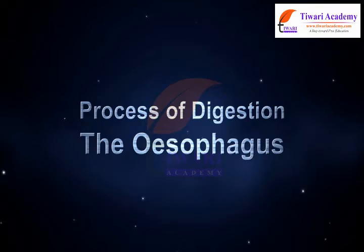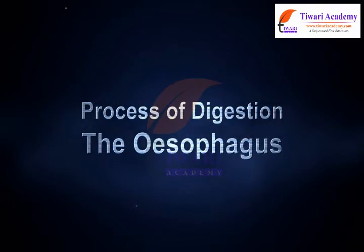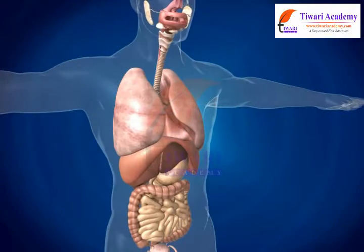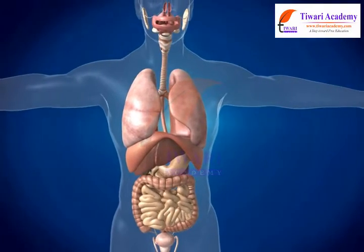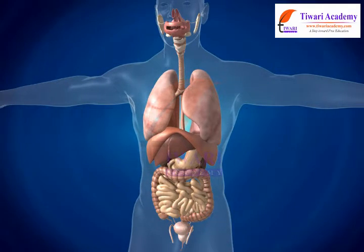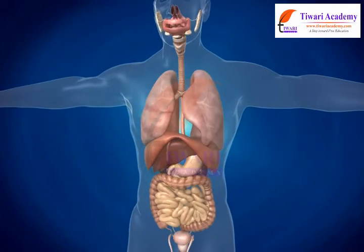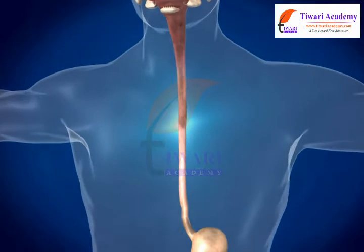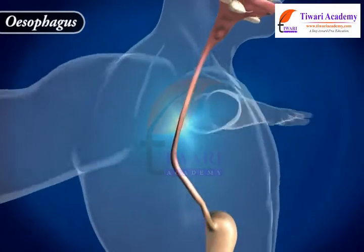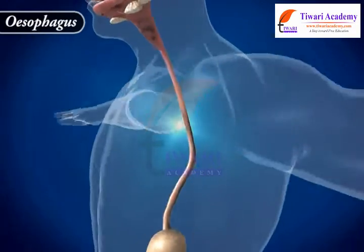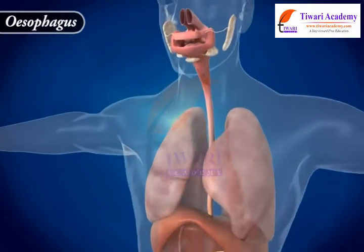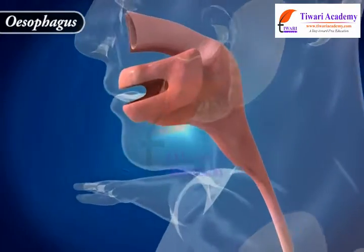Dear students, the swallowed food is passed into the food pipe, or esophagus. Let us learn more about the process of digestion in the esophagus. The esophagus is a long, narrow, and tubular part of the digestive system. It passes through the neck and pharynx and opens into the stomach.